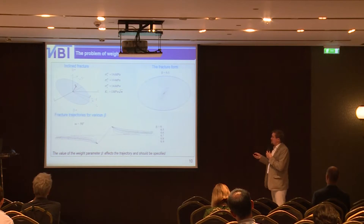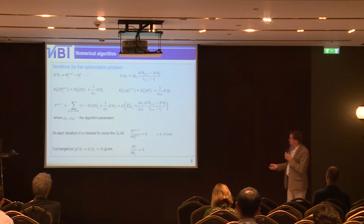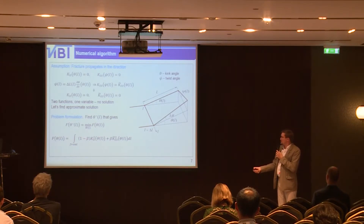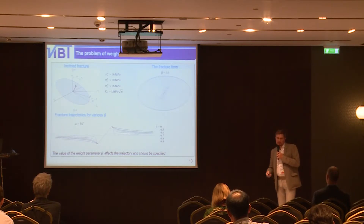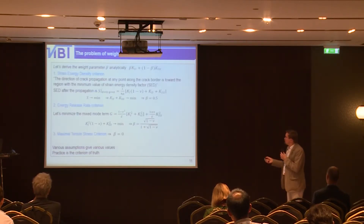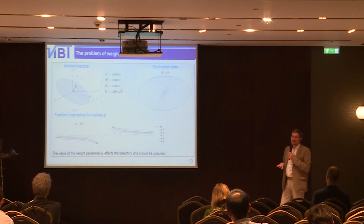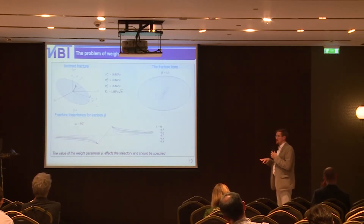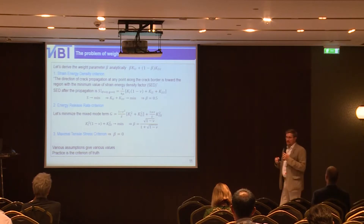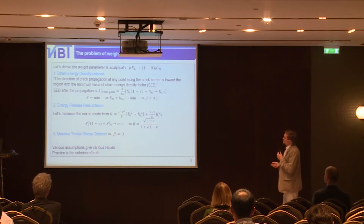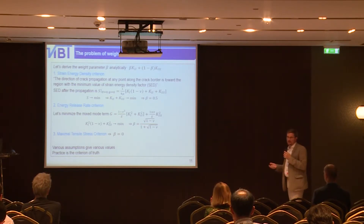The main problem is the weight parameter beta. If the result depends on this parameter, it affects the trajectory prediction, which is what we want to predict. A test case involves a planar fracture interacting with rock stressed by non-uniform stresses. Attempts were made to determine the weight parameter analytically, but different analytical criteria give different values, so calibration against experiment was chosen.